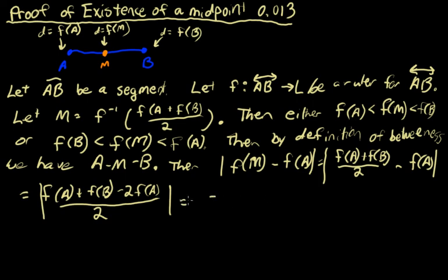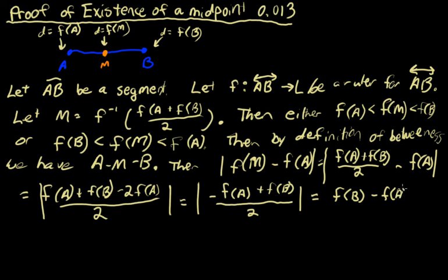And now we'll start subtracting some things. So that equals, we have -2f(A) + 1f(A), so -f(A). Then we have 1f(B) + f(B), and that's divided by 2.